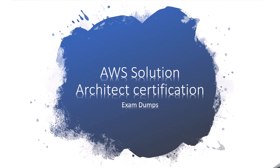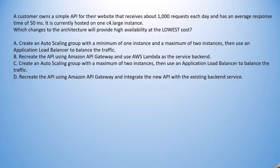The question says: a customer owns a simple API for their website that receives about 1000 requests each day and has an average response time of 50 milliseconds. It is currently hosted on one c4.large instance. Which changes to the architecture will provide high availability at the lowest cost?